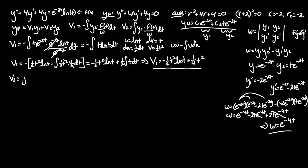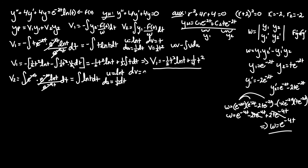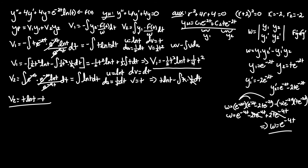For v₂ = ∫(y₁·f(t) / W) dt = ∫(e^(-2t)·e^(-2t)ln(t) / e^(-4t)) dt. The exponential terms cancel, leaving ∫ln(t) dt. Using integration by parts again: u = ln(t), du = (1/t) dt, dv = dt, v = t. So v₂ = t·ln(t) - ∫t·(1/t) dt = t·ln(t) - ∫dt = t·ln(t) - t.